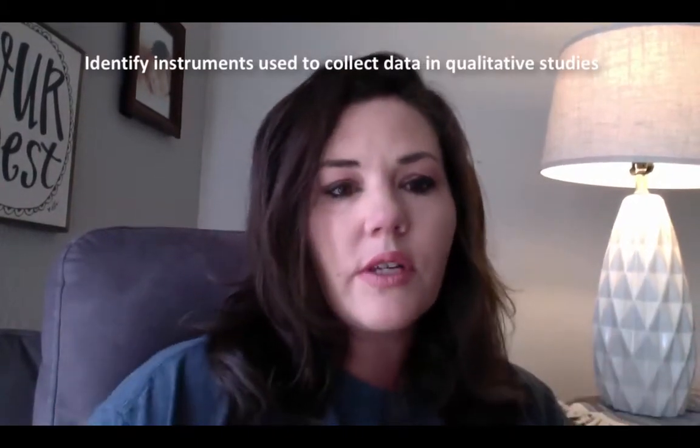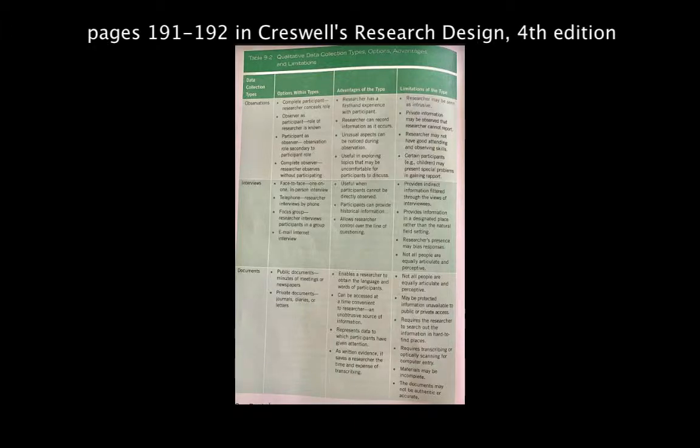The instruments we use to collect data in a qualitative study are very different from those we use in quantitative studies. There are four basic types of qualitative data collection, as stated in Cresswell's Chapter 9: Observations, Interviews, Documents, and Audiovisual Materials. This chart tells the advantages and limitations of each type. You can download the script from the Module 2 folder, or find the chart on pages 191 and 192 of the 4th edition Cresswell text, available in Blackboard.